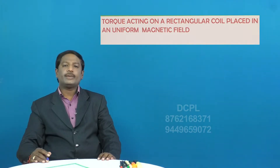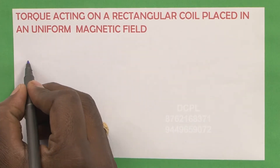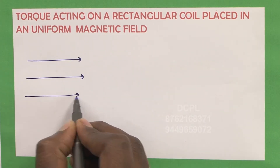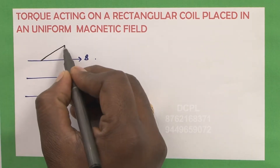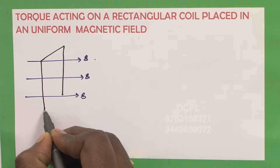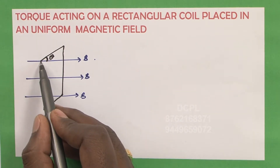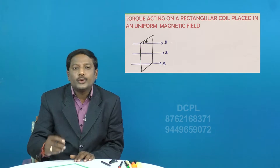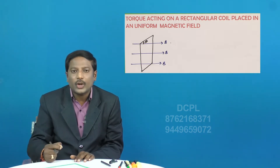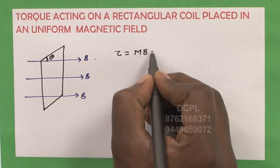Let us take up the next concept: the torque acting on a rectangular coil when it is placed in a uniform magnetic field. If you place a rectangular coil in a uniform magnetic field where the plane of the coil makes an angle theta, then the forces experienced by opposite limbs are in opposite directions, constituting a torque, which is a rotational effect.